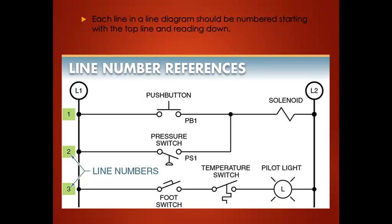Line numbering: each line in a line diagram should be numbered starting with the top line and reading down. The numbers on the side represent each line — line one, two, three — and are important to reference when troubleshooting a print.